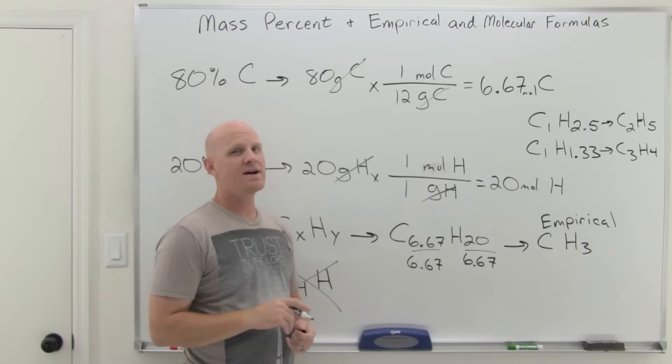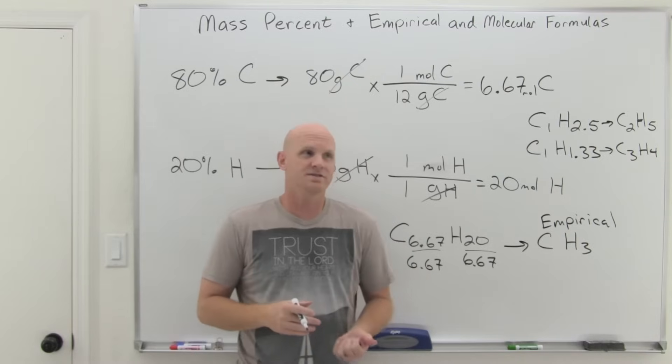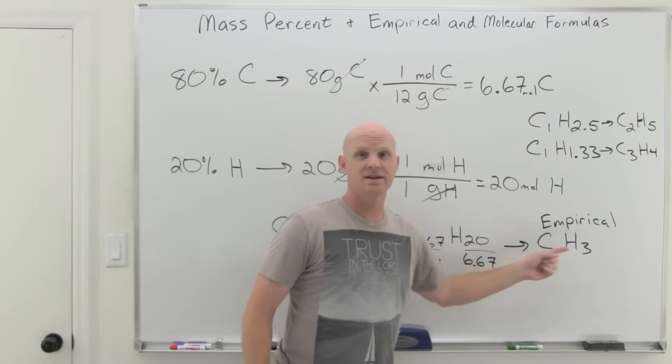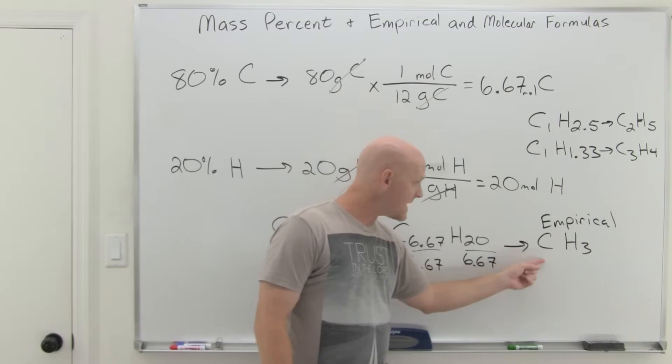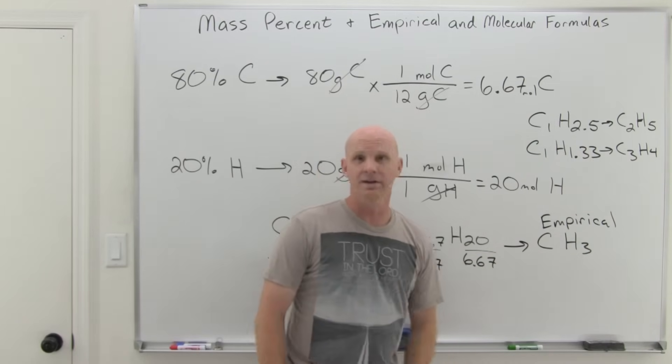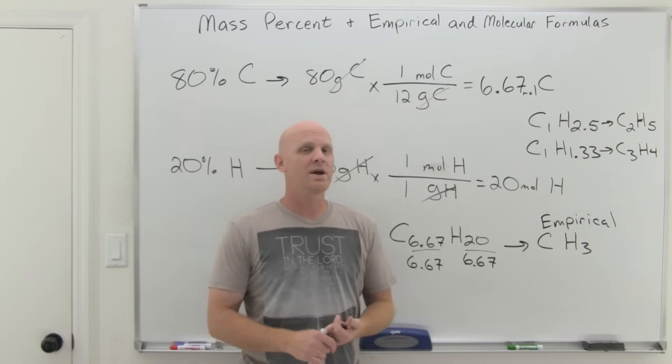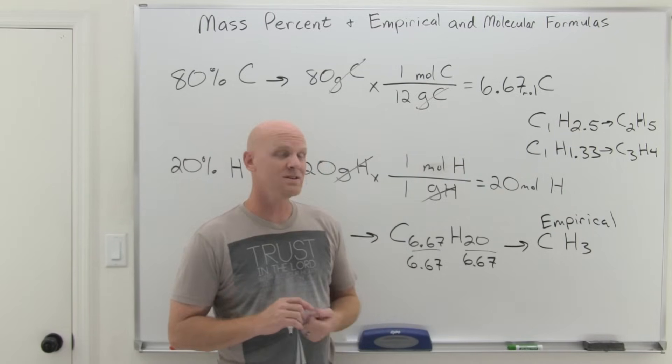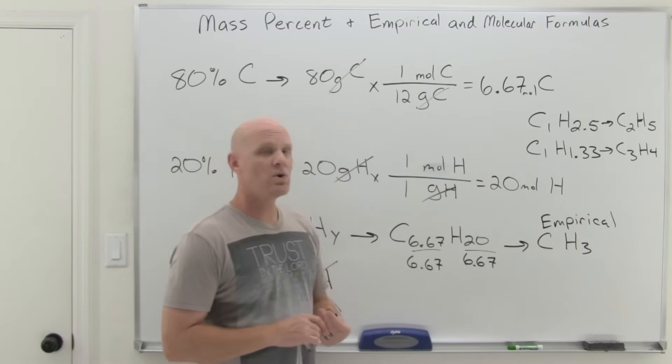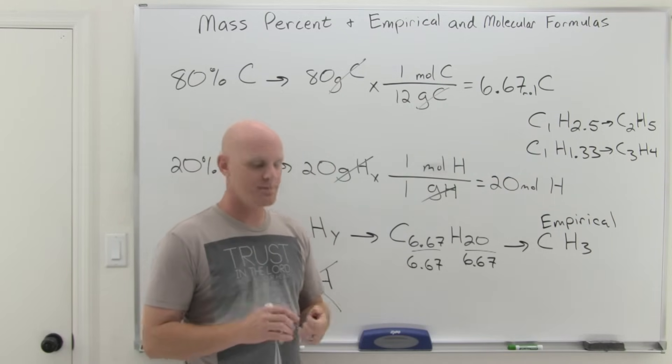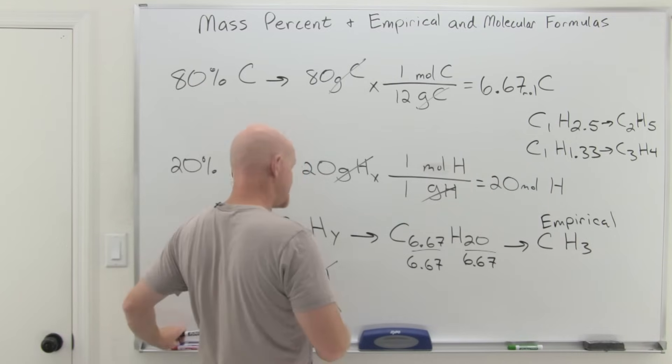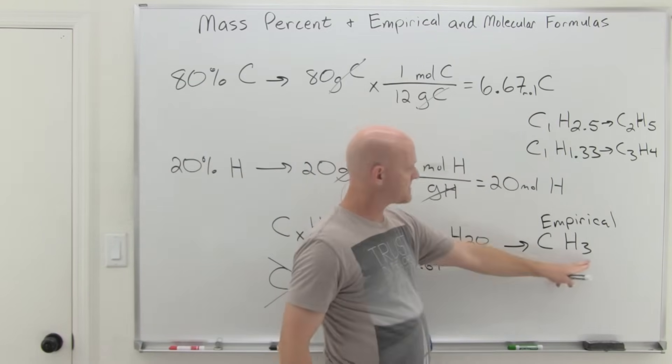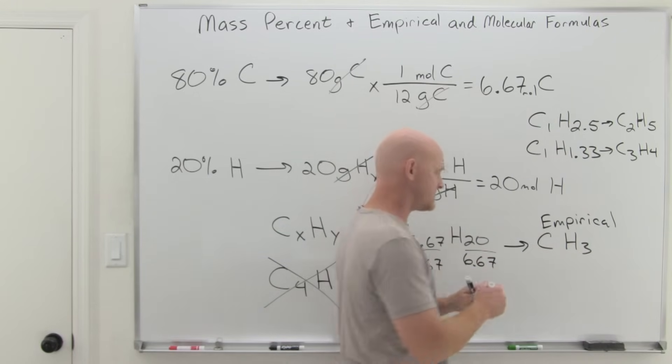The second question we're asked is, what's the molecular formula? Well, if we weren't given any more data, we'd just say, I don't know. And maybe it's that. Maybe it's C2H6, C3H9, C1,000H3,000, C1 million H3 million. There's an infinite number of one to three ratios that are possible. And so one other piece of information has to be given to you, and that is the molecular weight or molar mass. In this case, we're told that it weighs 30 AMUs. Well, if we take a look at CH3, carbon weighs 12. Each of the three hydrogens weighs one each for a total of three more. So 12 plus three is 15.